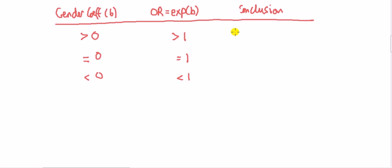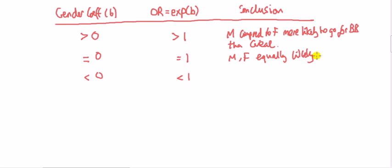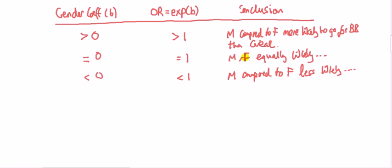To state the conclusions: if the odds ratio is greater than one, males compared to females are more likely to go for the breakfast bar over cereal. If it equals one, males and females are equally likely to choose the breakfast bar over cereal. If it's less than one, males compared to females are less likely to go for the breakfast bar over cereal.